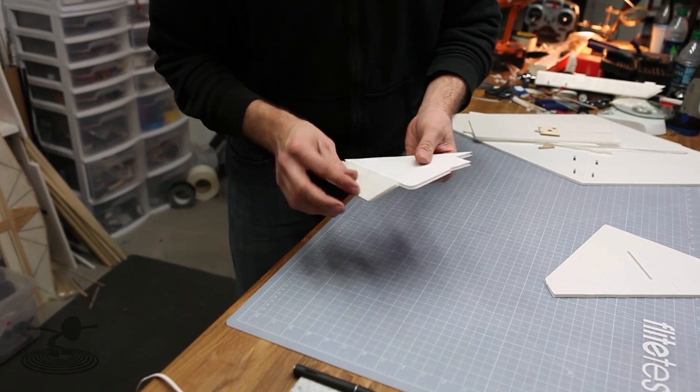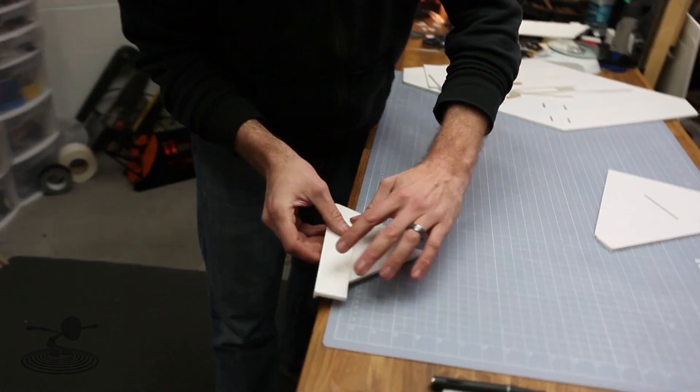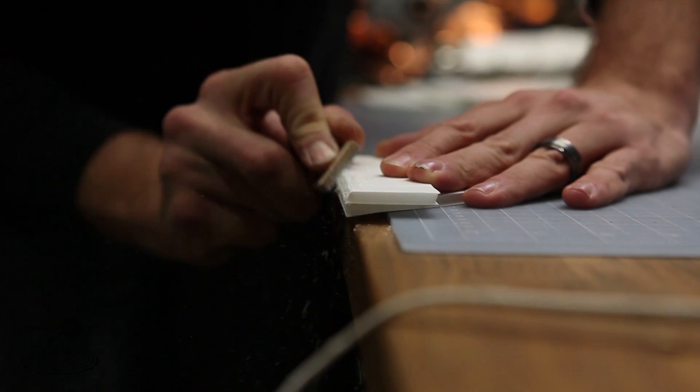Now, if you're in an environment where you don't want to use razor blades, you can simply take a piece of sandpaper on a board and sand your 45 degree bevel in.